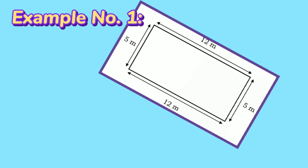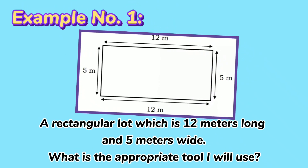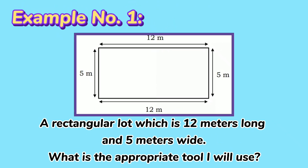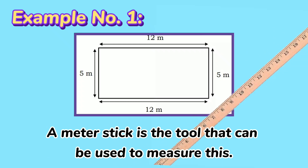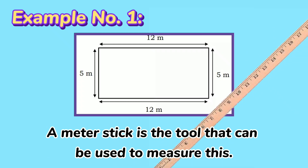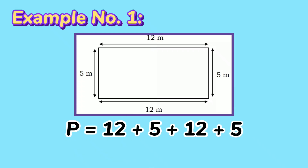Let's have these examples. Example number 1: a rectangular lot which is 12 meters long and 5 meters wide. What is the appropriate tool to use? The tool we are going to use is a meter stick. P equals 12 plus 5 plus 12 plus 5, and the perimeter is 34 meters.